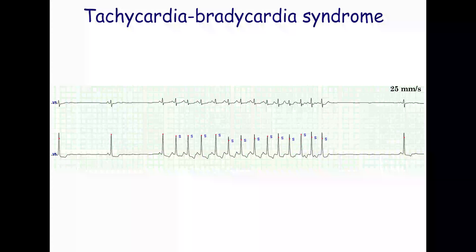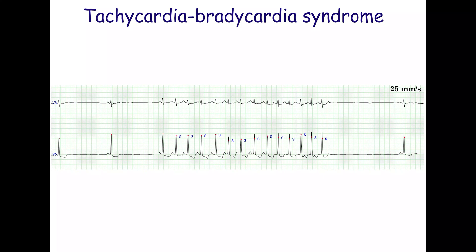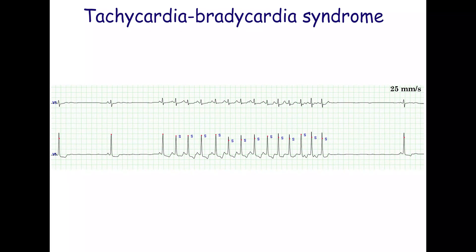Tachycardia-bradycardia syndrome is another form of sinus node dysfunction. It is characterized by alternation of paroxysmal supraventricular tachyarrhythmias and bradycardia. Additionally, atrial fibrillation may interrupt sinus bradycardia. After supraventricular tachycardia ends, there is often a long pause before a sinus or ectopic beat occurs.